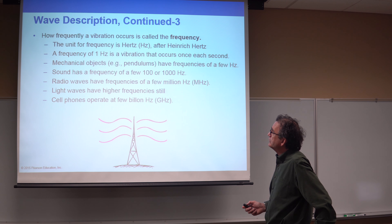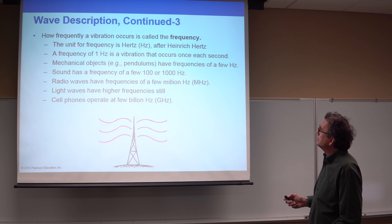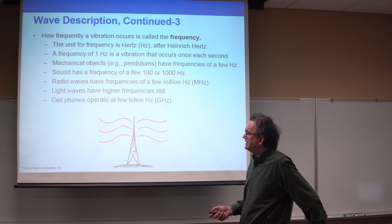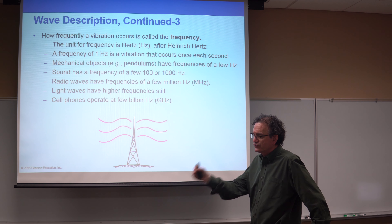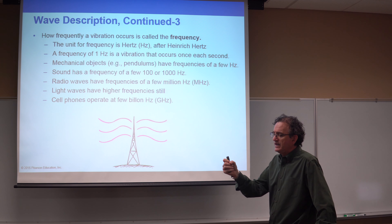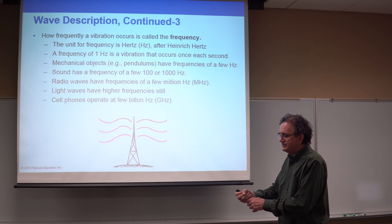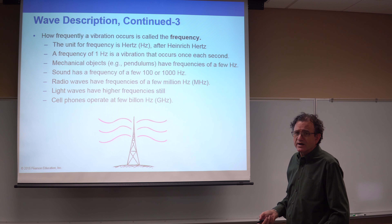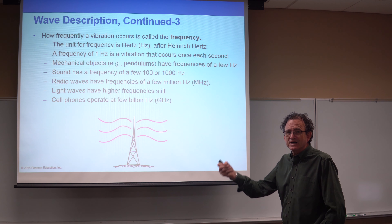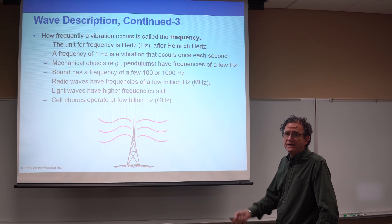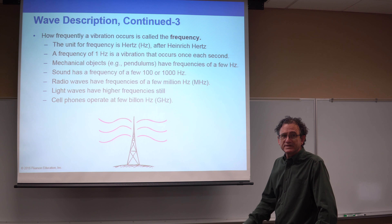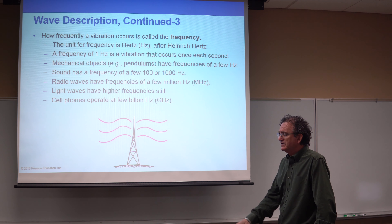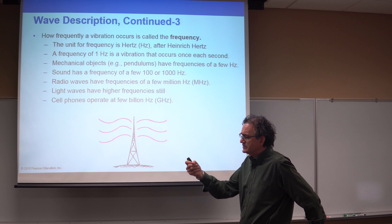For vibration and wave characteristics: crests are the high points of the wave, and troughs are the low points. The distance between troughs equals the distance between crests, and either can represent the wavelength. The concept of frequency is based on how frequently a vibration occurs when observed at a fixed point. Imagine you're fishing from the shore with a floating bob on the water. A speedboat comes by and disturbs your bob, and it begins to oscillate up and down. Counting how many times per second that bob goes up and down gives you the frequency of the wave.